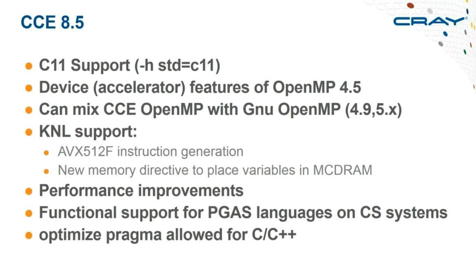KNL support also included a feature to target specific memory — you can specify which variables should live in MCDRAM versus DDR using compiler directives. There were a range of performance improvements, plus support for PGAS languages on Cray cluster systems (based on libfabric). A small but useful change: the optimize pragma was made available for C and C++, allowing optimization control at the function level within a source file.